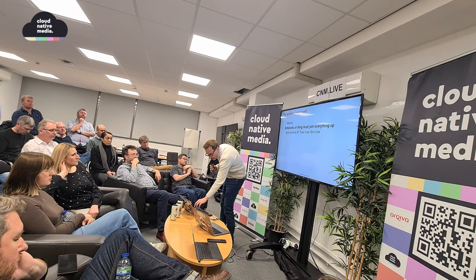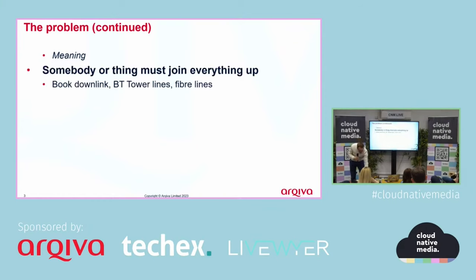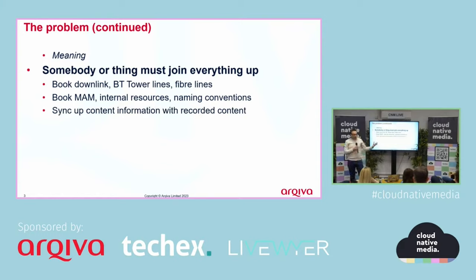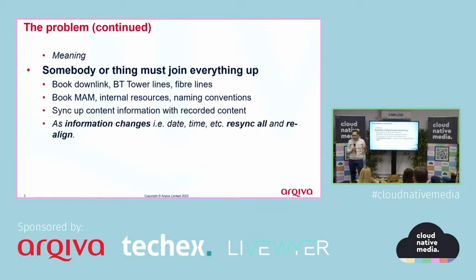Someone or something has to join everything up: booking all the different resources — the BT Tower lines, Viber lines, the MAM — you've got to give it a name, you've got internal resources, and then you've got to sync up the content information that news agencies put out with that recorded material. And then, of course, things change. People say something unexpected, it wasn't as planned, it goes longer — and you've got to do it all again.